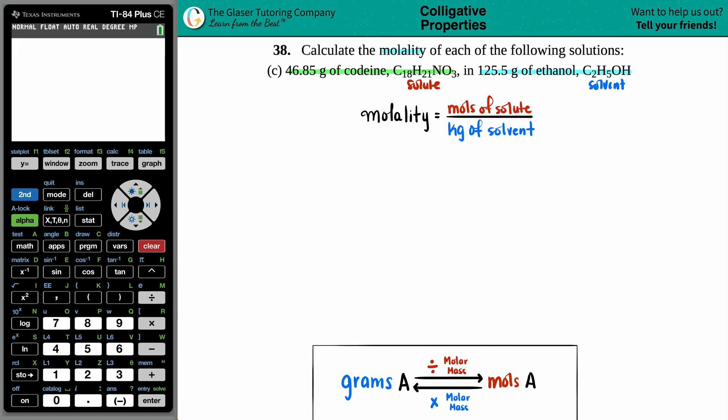So are we in the proper units? No. We need moles of solute. They gave us grams. So the first thing we have to do is convert the 46.85 grams of the codeine, C18H21NO3, and we want to go to moles of the codeine, C18H21NO3.